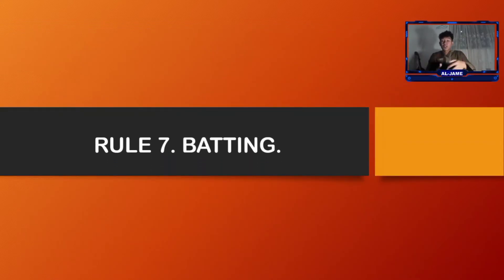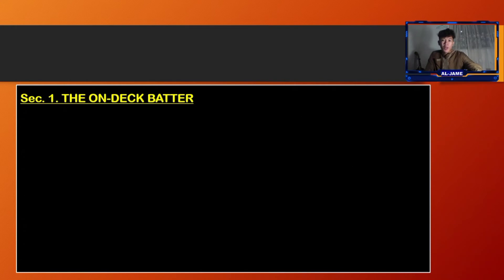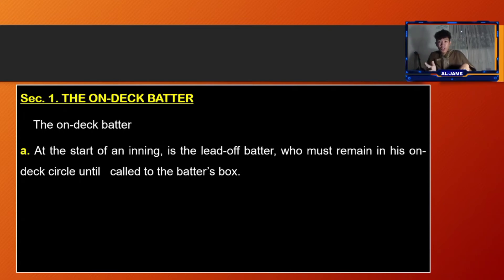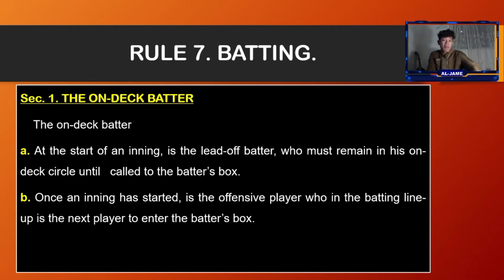Now let's proceed to rule number seven, the batting. Section one, the on-deck batter: at the start of an inning, the lead-off batter must remain in his own on-deck circle until called to the batter's box. Once an inning has started, it is the offensive player next in the batting line-up who is next to enter the batter's box.